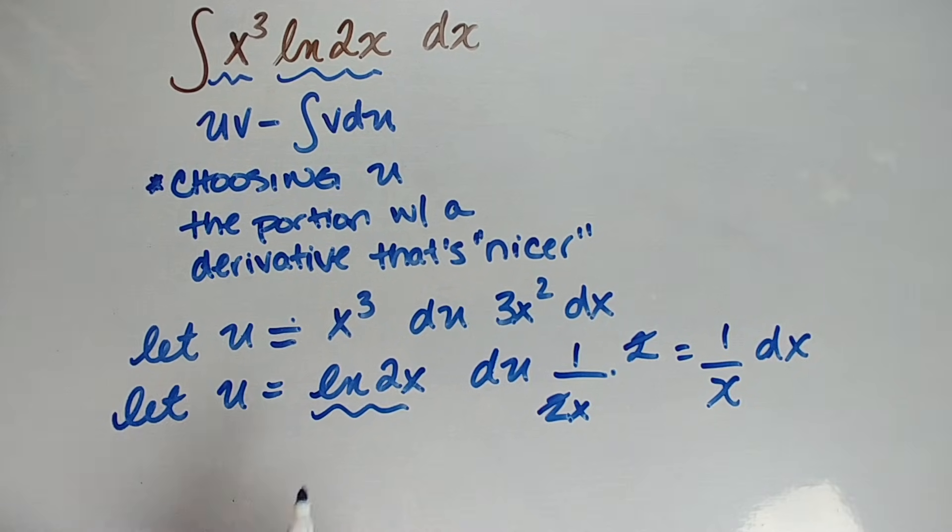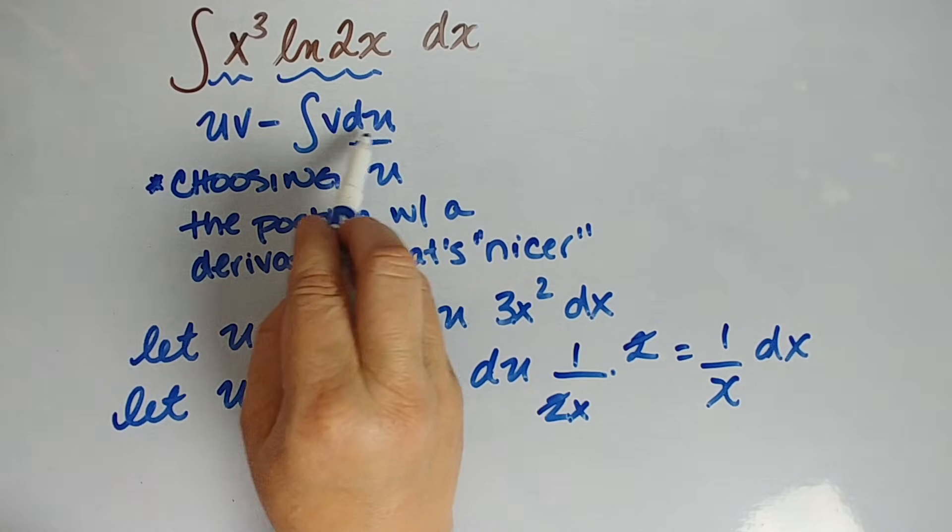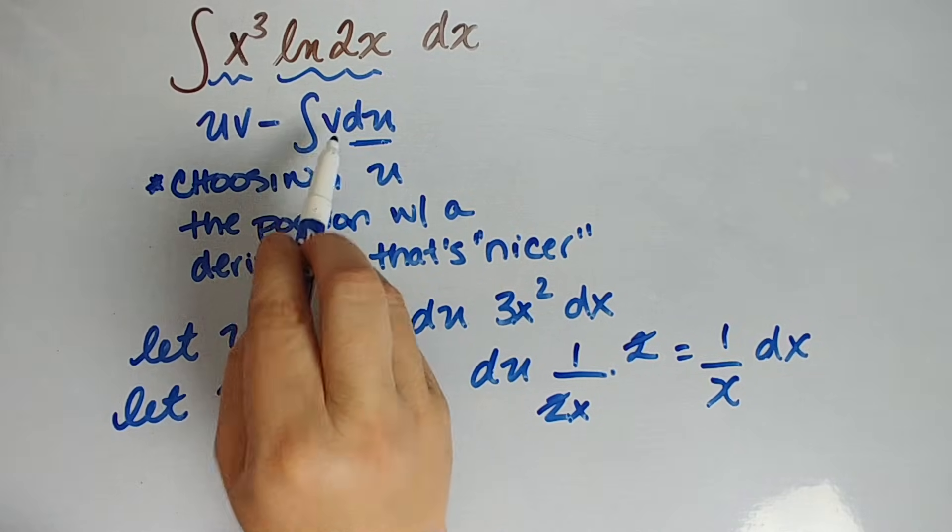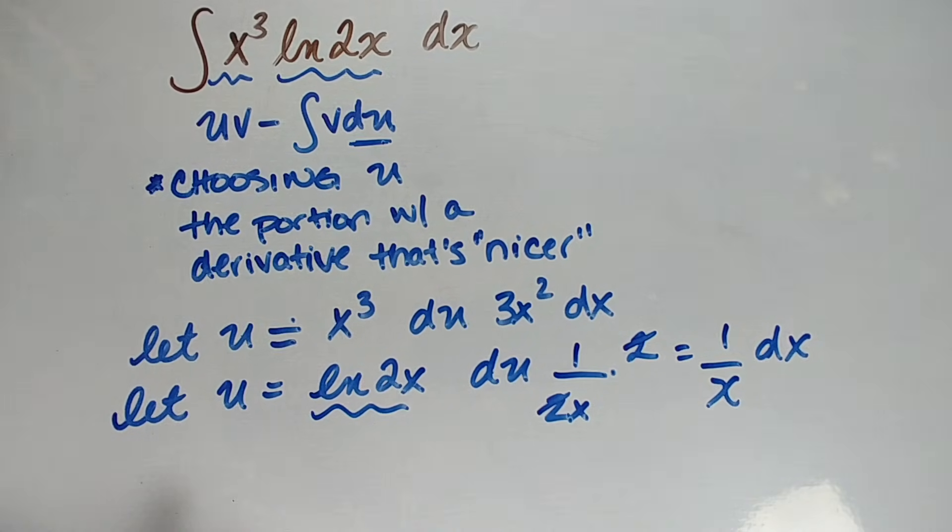And why do we want it to be nicer? Look, du is the thing we're taking the integral of. We got vdu we're taking the integral of. So we want it to be nicer, easier to deal with. So we're definitely going to let u be this natural log of 2x. And that's generally what I look at. I'm going to look at the two portions of my integral and say, hey, which of these is nicer if I were dealing with its derivative rather than it?